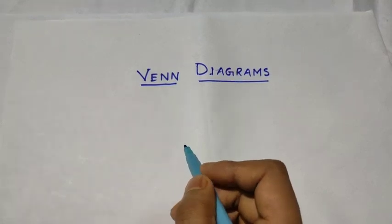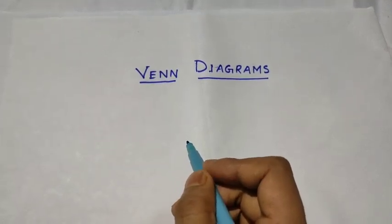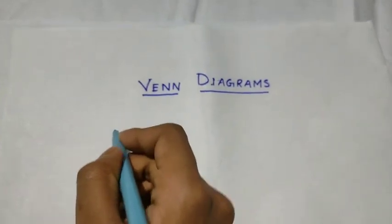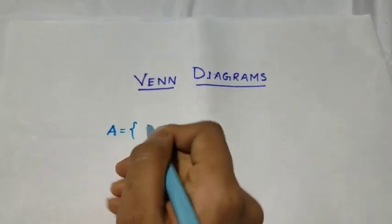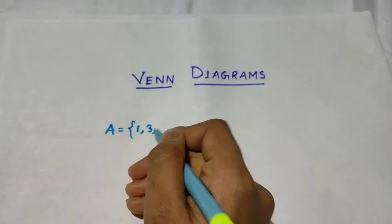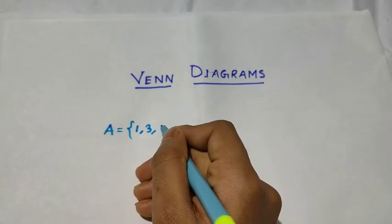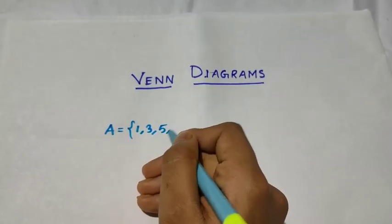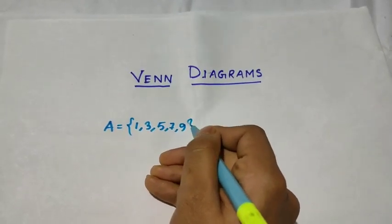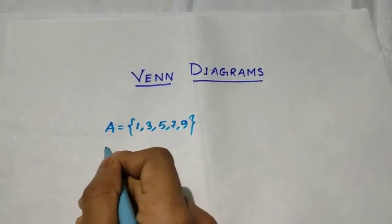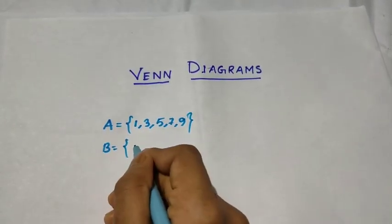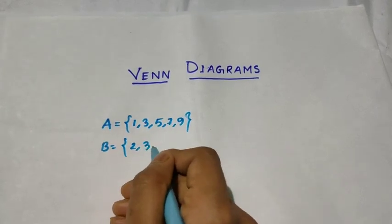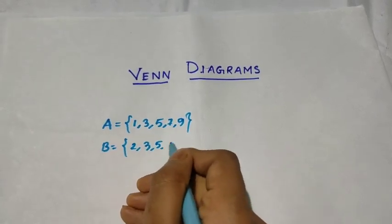So what is a Venn diagram? It is a graphical or pictorial representation of sets. Let us assume two sets. Set A is a set of all odd numbers from 1 to 10. And set B is the set of {2, 3, 5, 6}.